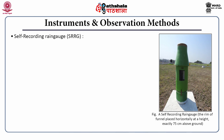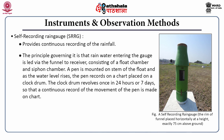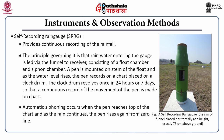Then comes the self-recording rain gauge, which provides a continuous recording of rainfall. Rain water entering the gauge via a funnel goes to a receiver consisting of a float chamber and a siphon chamber. A pen is mounted on the stem of the float, and as the water level rises, the pen records on a chart placed on a clockwork drum. The drum revolves once in 24 hours or 7 days, providing a continuous record. Once the automatic siphoning occurs and the pen reaches the top of the chart, as rain continues, the pen rises again from the zero line. If there is no rain, the pen traces a horizontal line.